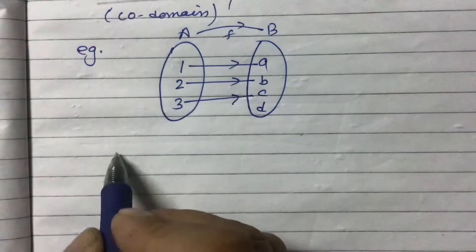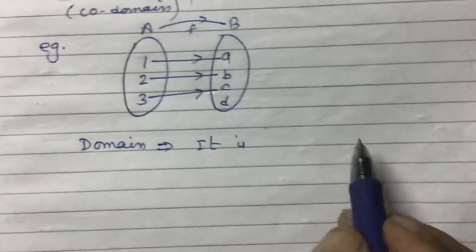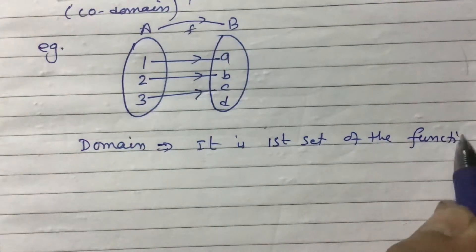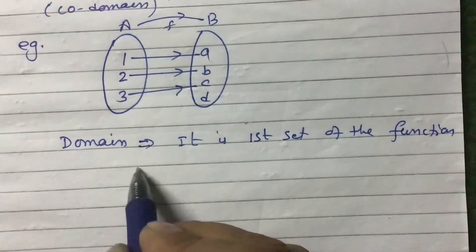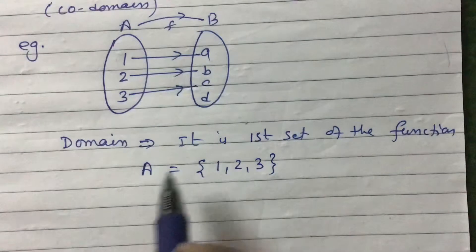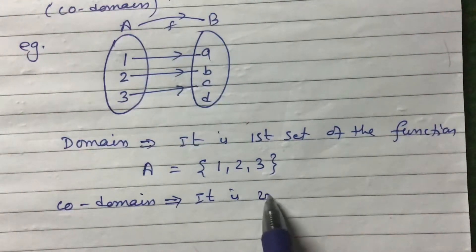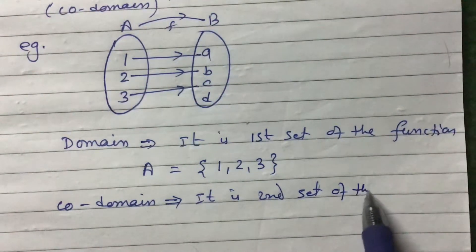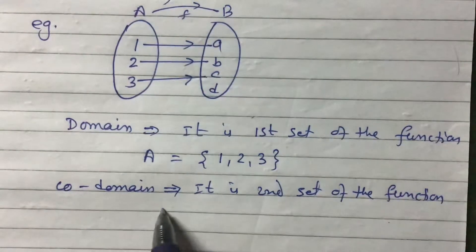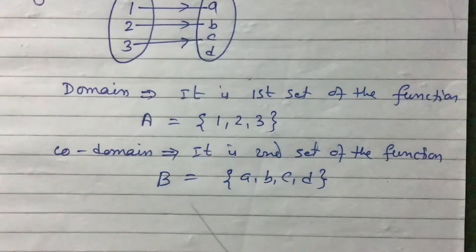Let me now define the different parts of the function. Domain means the first set of the function. So domain equals {1, 2, 3}. Codomain is the second set of the function. Here set B equals {a, b, c, d}, so this is the codomain.